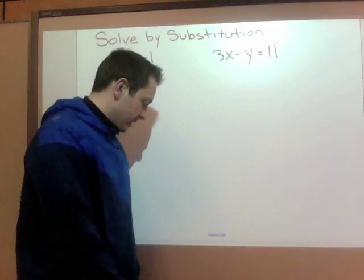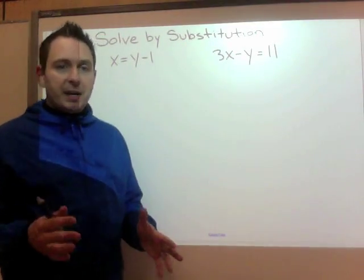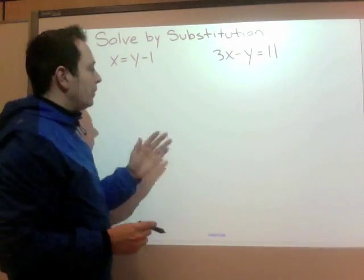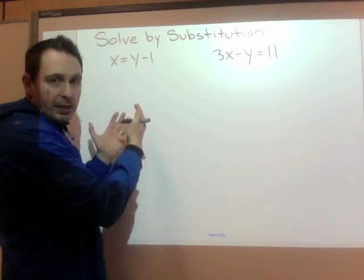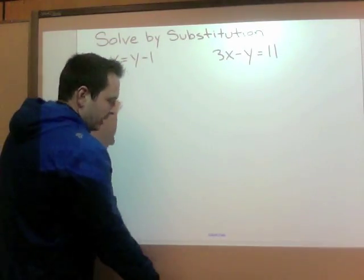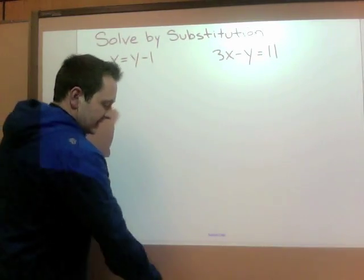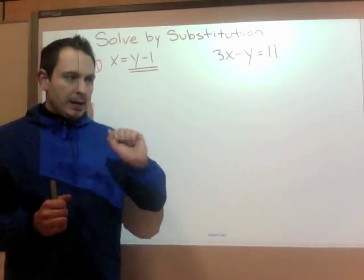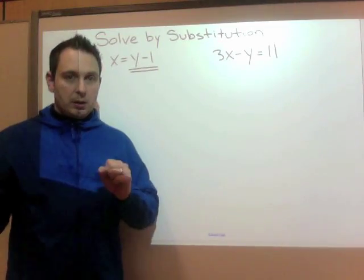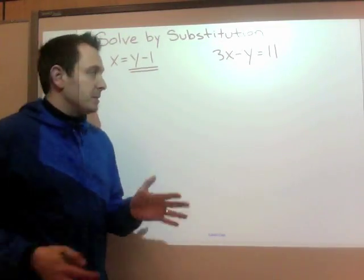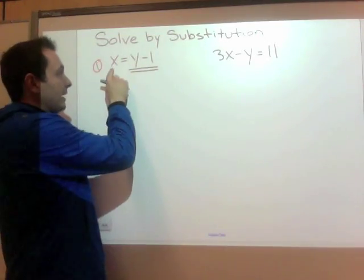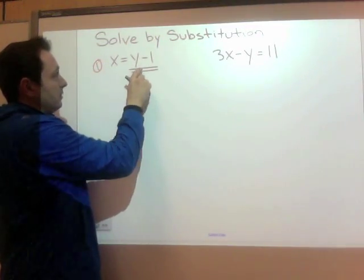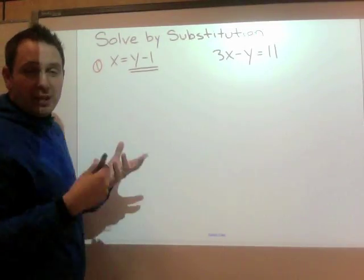So let's solve by substitution. Step 1 said to isolate any variable. Now I have 4 variables here. I have an x, I have a y, I have a 3x, and I have a y. So in this case though, this x is already isolated. That x is by itself. There's nothing else on that side. It's equal sign. So step 1 is actually done for me. So I'm going to call that step 1. We've isolated the variable. Now I'm going to use an example here. A nickel is the same as a 5 cent coin. They have the same value. They're the same thing, just different names. In this case, these both hold the same value. x is y minus 1 in this case.